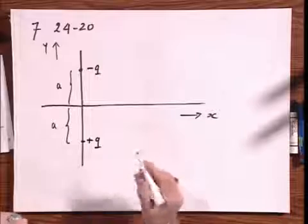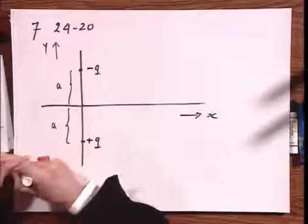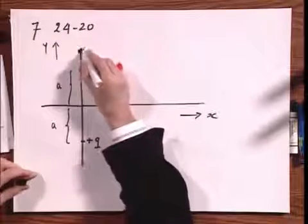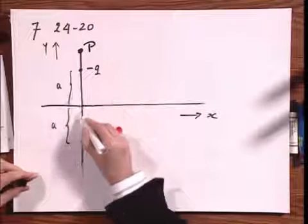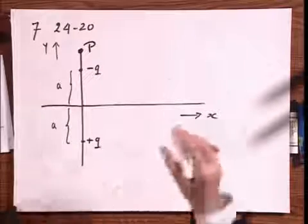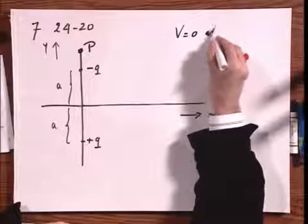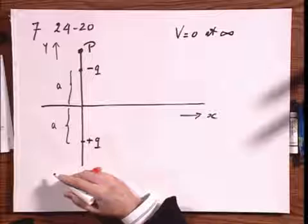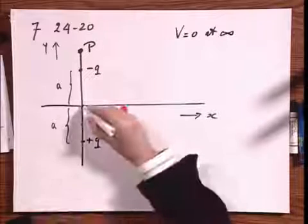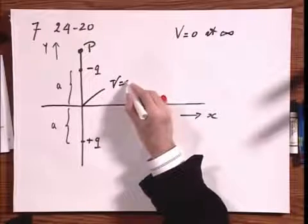And I want to know what the potential is at a point P, everywhere on the y-axis. Here, here, here, everywhere. Well, we'll take v equals zero at infinity. Notice that v is also zero here.